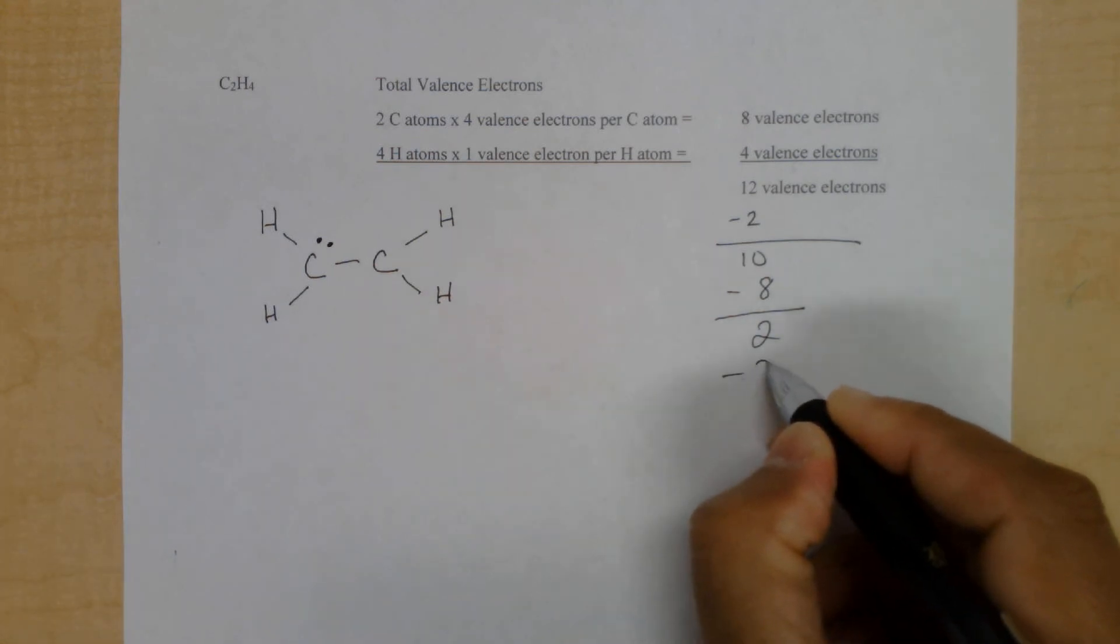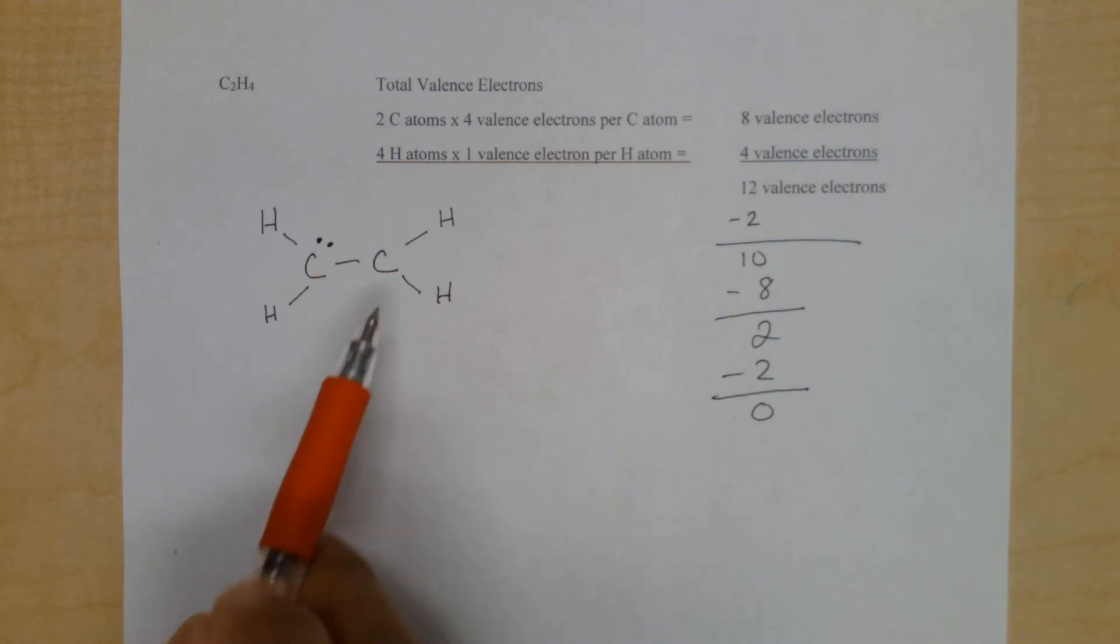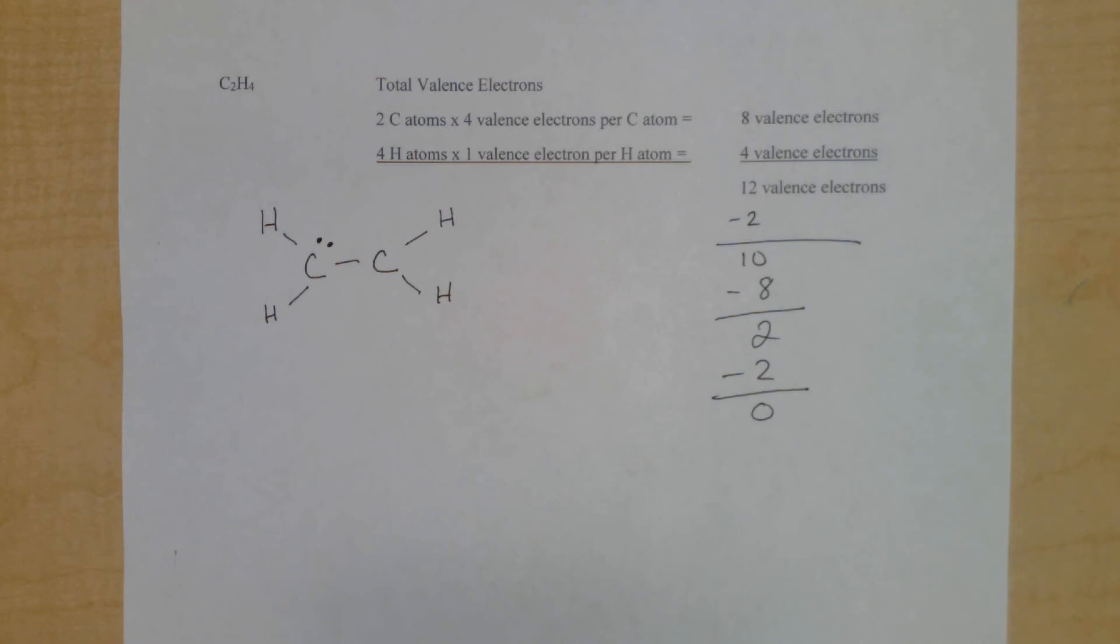And notice, there are 0 electrons remaining. But the other carbon atom only has 6 valence electrons. As we saw in the rules for drawing Lewis structures, we can move a lone pair of electrons between neighboring carbon atoms if we need to satisfy the octet rule. So we'll do that here.